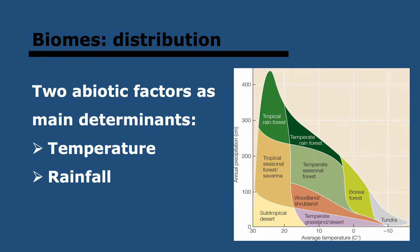Biomes are distributed mainly as determined by two abiotic factors: temperature and rainfall. A biome is a group of ecosystems of a specific type, very similar to one another. You can find the most likely ecosystem given any combination of precipitation and temperature. Be aware of this graph because you may be asked questions about it, specifically in paper two.